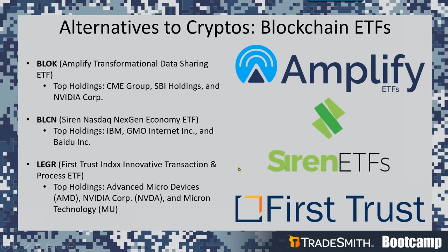There are three main blockchain ETFs. The first is BLCN — one of the largest blockchain ETFs by total assets. Block invests a minimum of 80% of its net assets in companies engaged in the development and utilization of blockchain technology. It follows a blended strategy, investing in a mix of value and growth stocks of various market caps across the world. The top three holdings include CME Group Inc. (the world's largest financial derivatives exchange), SBI Holdings (a financial services company based in Tokyo, Japan), and NVIDIA Corporation (a tech company that designs graphics processing units for gaming and professional markets).